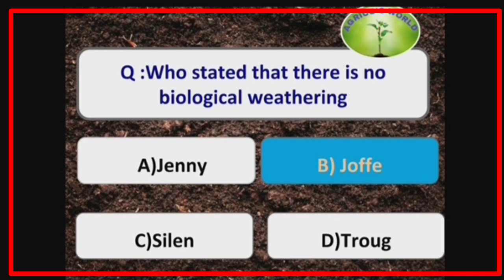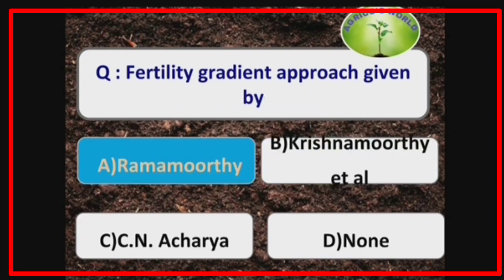Joffe is the scientist who stated that there is no biological weathering. Fertility gradient approach was given by the scientist Ramamurthy.